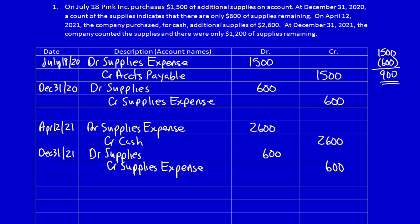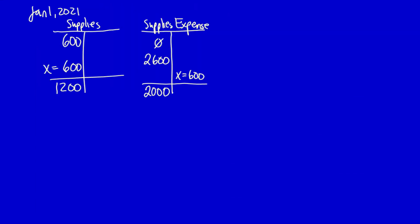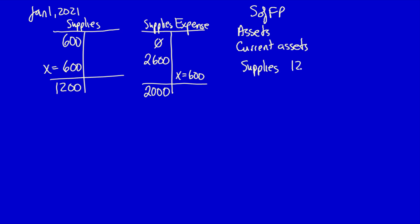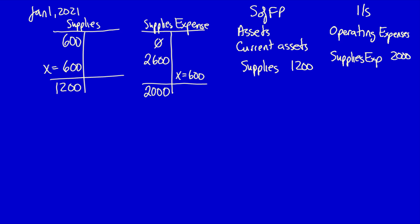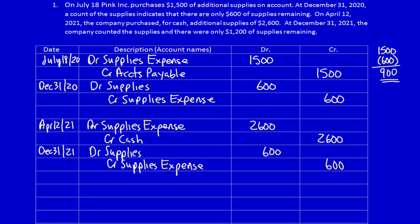Let's double-check the financial statements to make sure they're correct. On the statement of financial position, under Assets, Current Assets, I have supplies equal to $1,200 — exactly what the count indicated has future economic benefit. On the income statement, operating expenses, supplies expense is $2,000 — the amount of supplies used or consumed during the period. At the end of the year, the statements are in perfect condition: assets reflect what has future economic benefit and expenses reflect what has been used or consumed to help generate revenue. That's an example of the income statement method for prepayment adjusting entries — deferred expense, supplies adjusting entry.